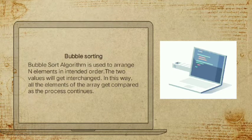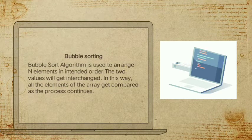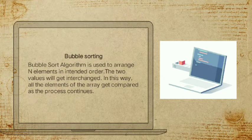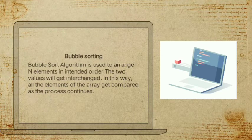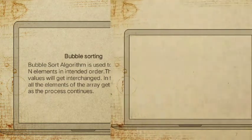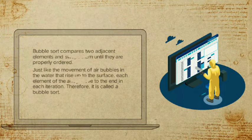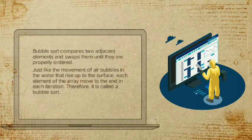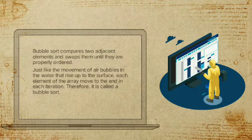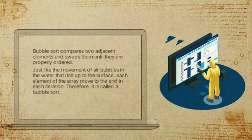We will now proceed to bubble sort. The bubble sort algorithm is used to arrange a number of elements in intended order. Two values get interchanged as the process continues. Bubble sort compares two adjacent elements and swaps them until they are properly ordered.